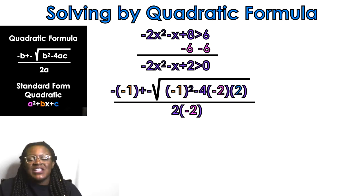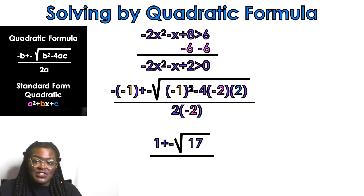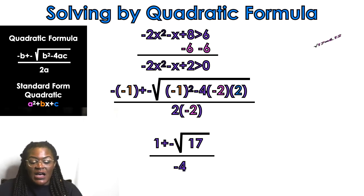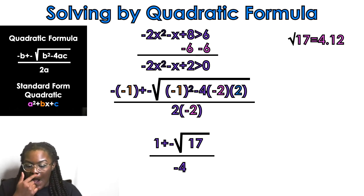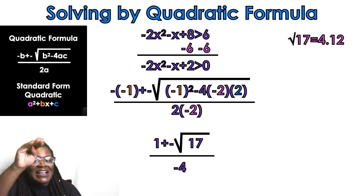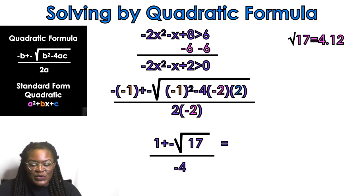This is just a PEMDAS situation — figuring out the order of operations under the radical. Exponents first, then multiplication, then subtraction. When I simplify under the radical I get 17, and negative negative 1 turns into a positive 1. On the bottom, 2 times negative 2 is negative 4. The square root of 17 is approximately 4.12.